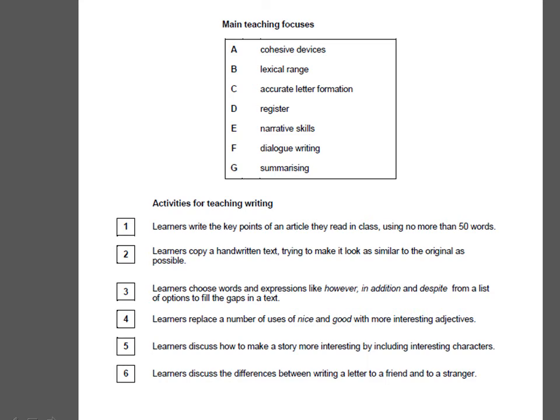Number 2: Learners copy a handwritten text trying to make it look as similar to the original as possible. This is C — accurate letter formation. Number 3: Learners choose words and expressions like however, in addition, and despite from a list of options to fill the gaps in a text. This is cohesive devices.